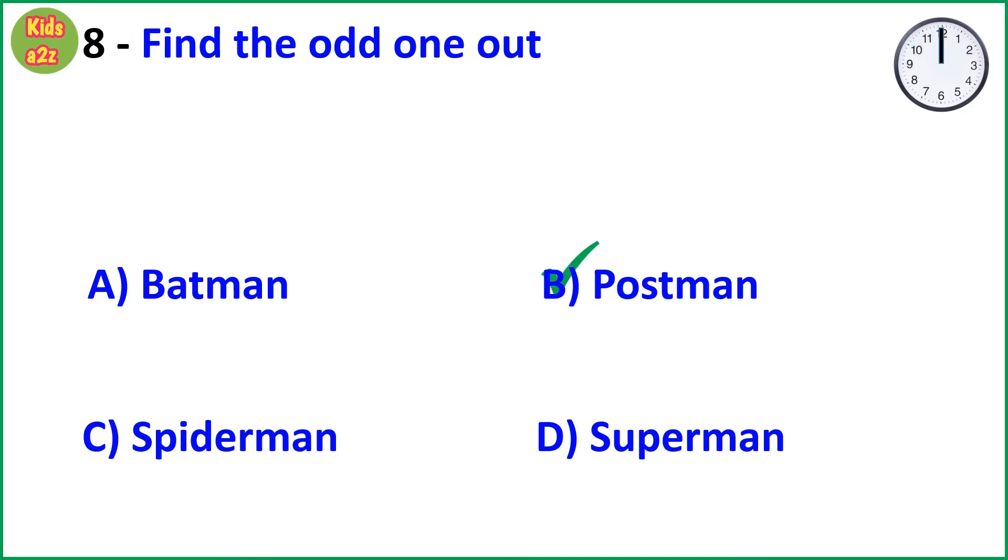Answer is option B, that is postman. Because all options other than postman are fictional characters or superheroes, and postman is a profession. So it is the odd one out.